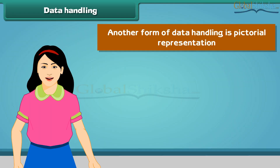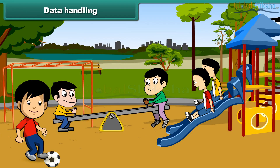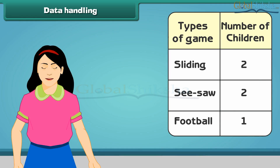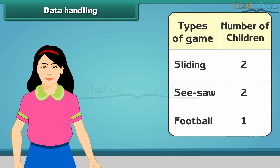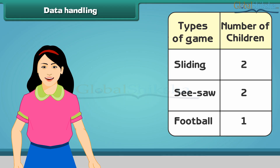Another form of data handling is pictorial representation. This is a garden with kids playing. Some of them are sliding, some are playing on a seesaw, while some are playing with a football. You can easily represent the number of children on slide, seesaw, and playing football by using tally marks. This picture is also represented by a chart, which represents information in the form of a picture. Therefore, we can get information by looking at the chart carefully.